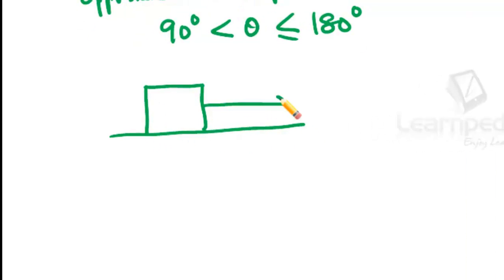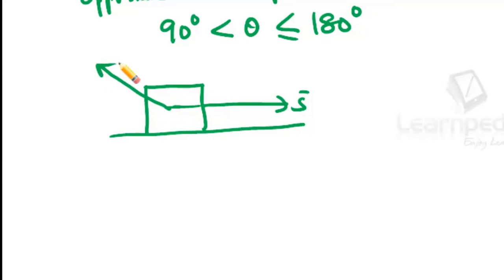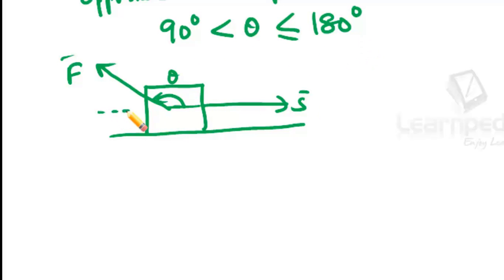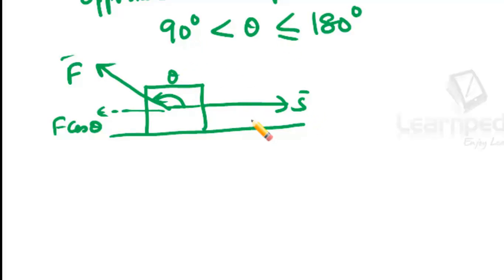If this is the body displacing in this direction, the force acting is in this direction, and this angle is theta. Theta is more than 90 degrees — between 90 to 180 degrees. Then the component of force taken along displacement will come opposite to the displacement. F cos theta will be opposite to the displacement. Whatever angle greater than 90 degrees we substitute, work done is negative.